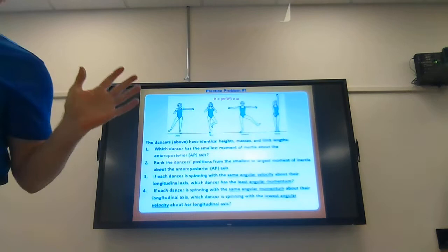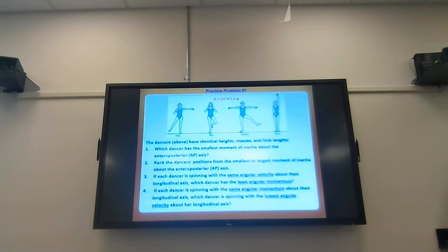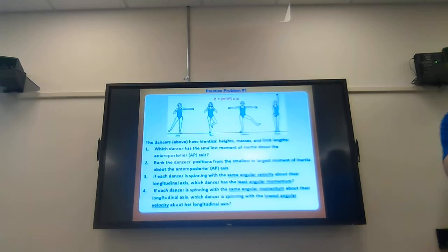During the practice problem, a student asks: the anterior-posterior axis is which plane? The answer is the frontal plane - side-to-side motion occurs around the anterior-posterior axis. For question one, consider how the mass is distributed. Look at all four positions and generally consider where the mass is relative to the axis.